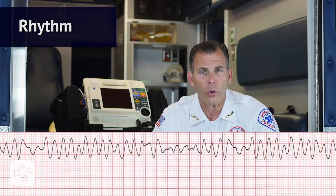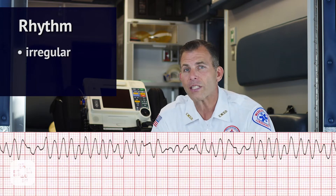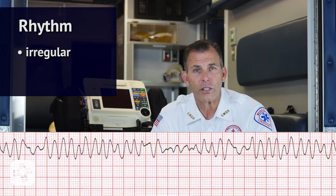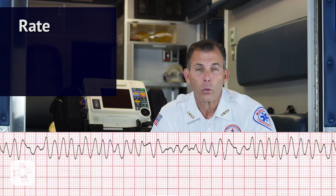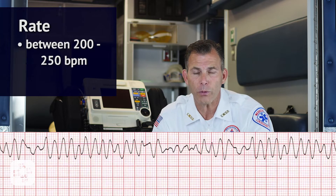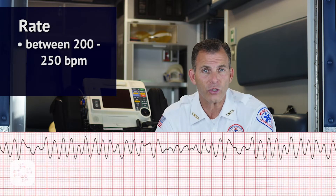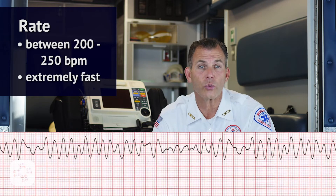But when we look at the EKG we still want to ask ourselves some questions. Is the rhythm regular or irregular? In this case it's irregular. What is the rate? We're somewhere between 200 and 250 beats per minute. So is that rate normal, fast, or slow? Well of course the rate is extremely fast.